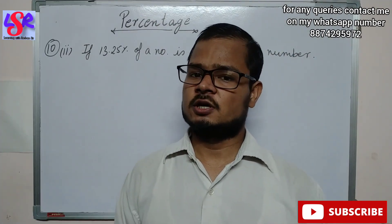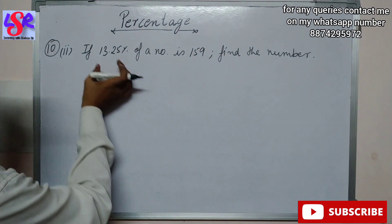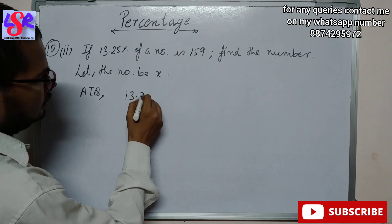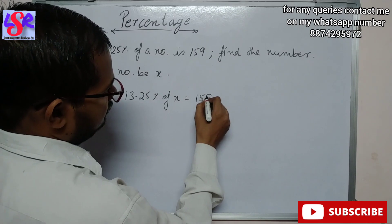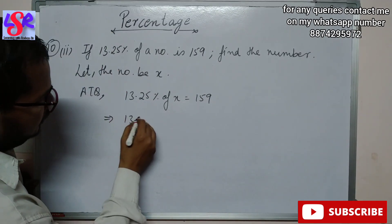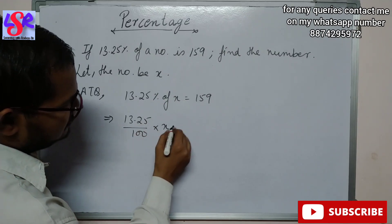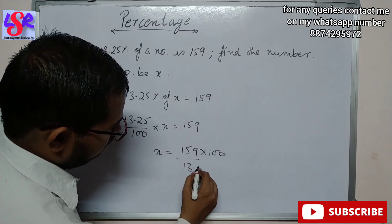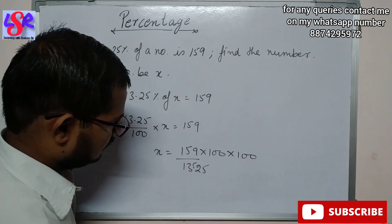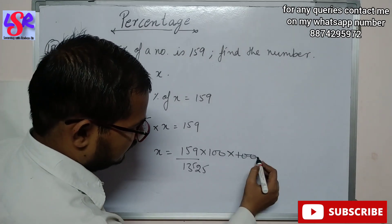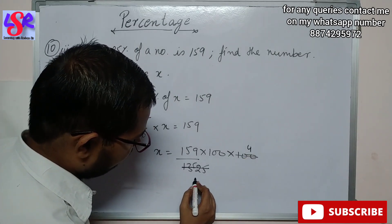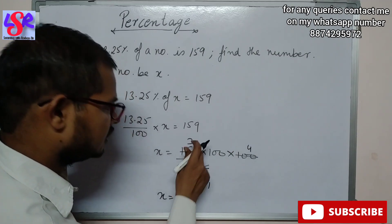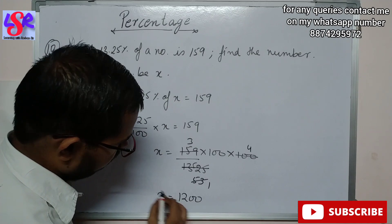Now let us see the second part of Question 10. Here we have to find the number whose 13.25 percent is 159. Let the number be x. According to the question, 13.25% of x equals 159. This can be written as 13.25 upon 100 into x equals 159, so x equals 159 into 100 upon 13.25. Removing the decimal gives 15900 upon 1325, which when divided by 25 gives 636 upon 53. Then 53 into 3 is 159, and further simplification gives x equals 1200 as the required number.